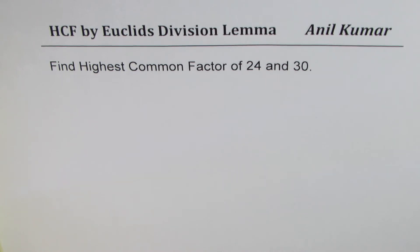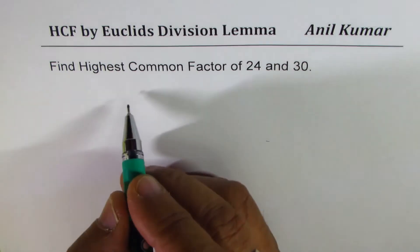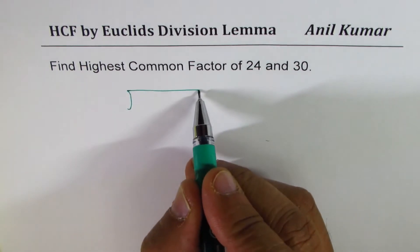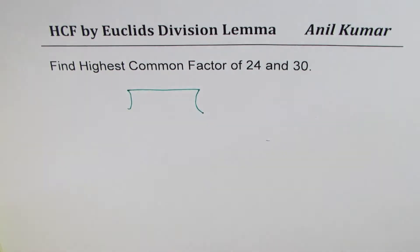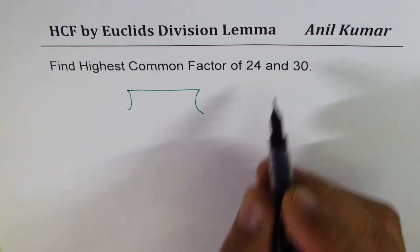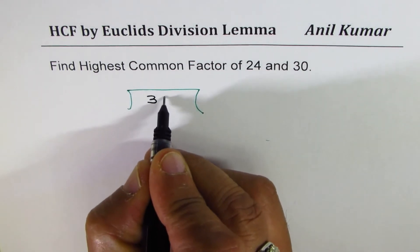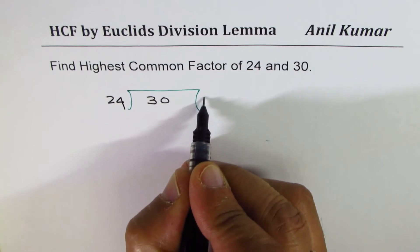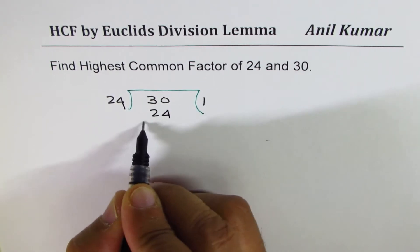Here, we have taken 24 and 30. So decide which should be the divisor, which should be the dividend. Clearly, you cannot divide 24 by 30. You have to divide 30 by 24. So write 30 here as the dividend and divisor is 24. It can go one time, and the remainder is 6.